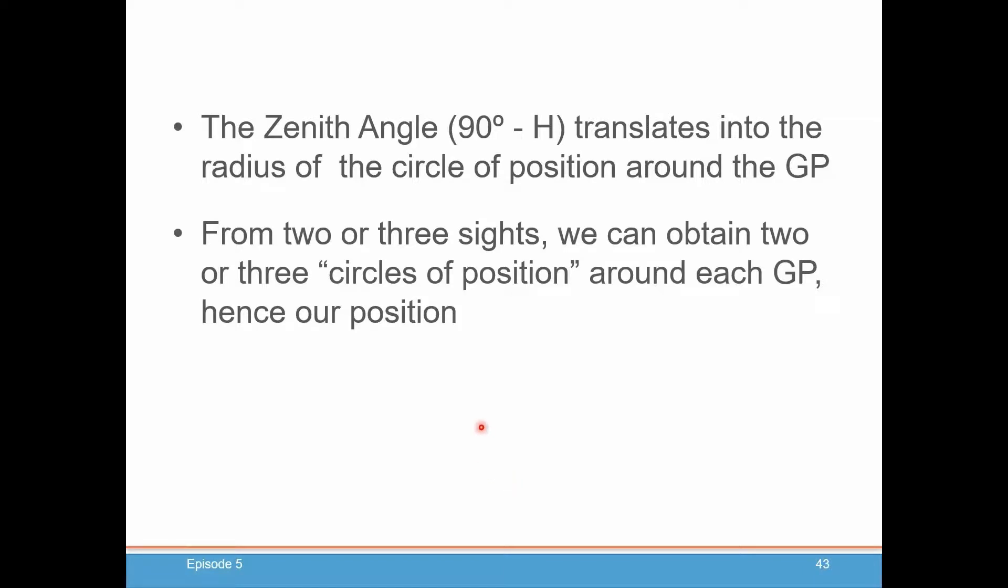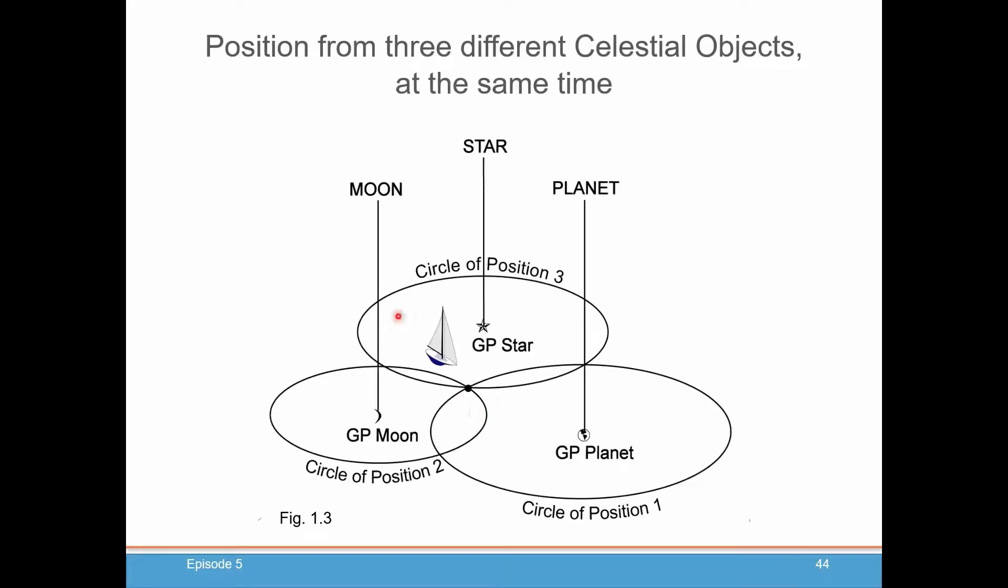Once you have two or three sights, and there are circles of position around each GP where they cross is our position. Here are some examples. So we take the sight of a star, a planet, and a moon. The almanac tells us where the GP of each of those bodies is located. Our sextant measures how far away we are from each of those bodies. That determines circles of positions around each body, and where they cross is the position of our boat.